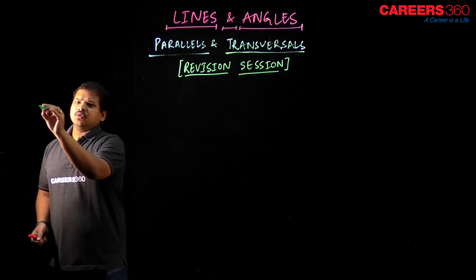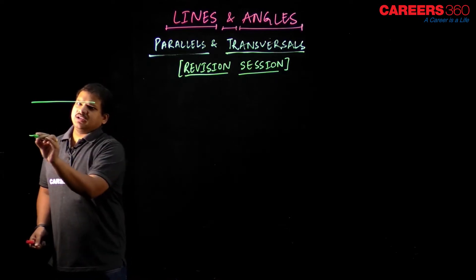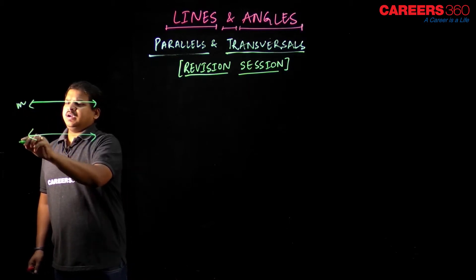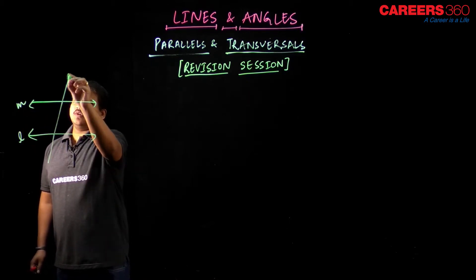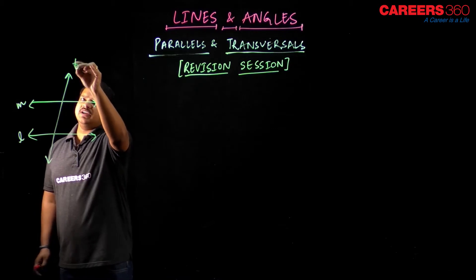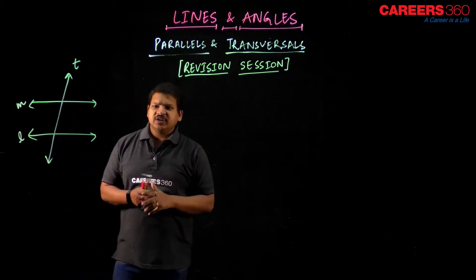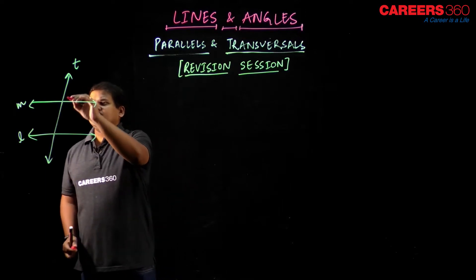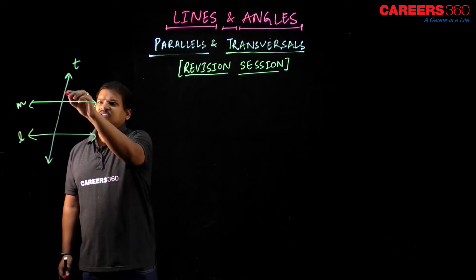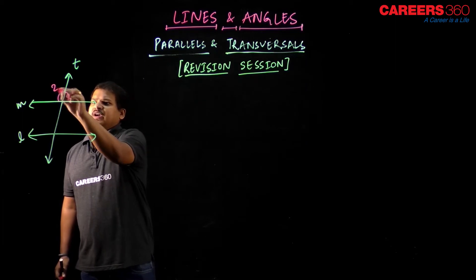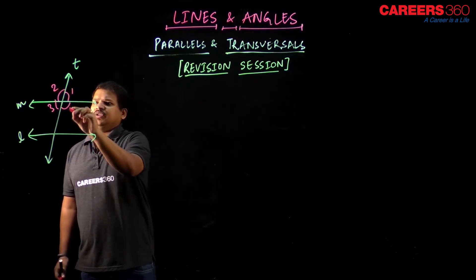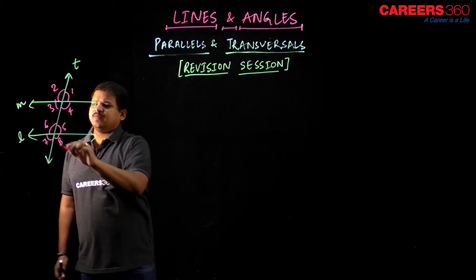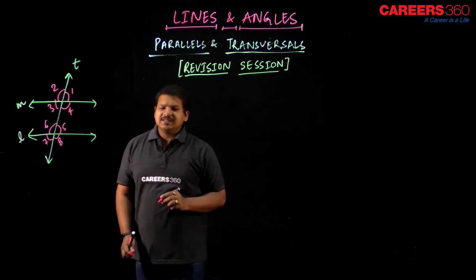Let us consider parallel lines M and L, and draw one transversal over it, that is T. If M and L are parallel and T is a transversal, then let us draw angles 1, 2, 3, 4, 5, 6, 7, and 8. So 8 angles are formed in total.